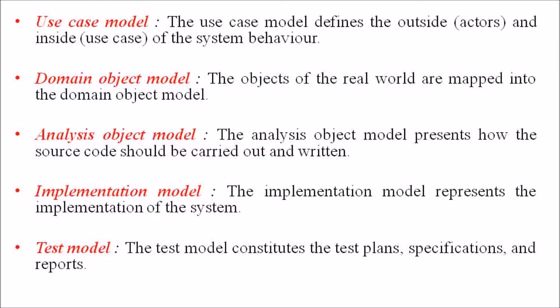The use case model defines the outside — that is, actors — and the inside — that is, use cases — of the system behavior. In the domain object model, objects of the real world are mapped into the domain object model. The analysis object model presents how the source code should be carried out and written. The implementation model represents the implementation of the system, and once the implementation models are finalized, the test model occurs. The test model constitutes the test plans, specifications, and reports.